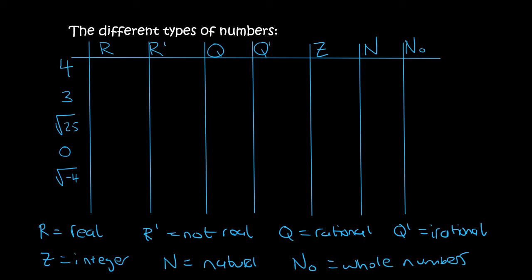So the number 4 — is it real? Can you see it? Yes. So it can't be non-real, I'm going to put a little x there. Rational is any number that can be written as a fraction. 4 is the same as 4 over 1, so yes it is rational, which means it's not irrational.